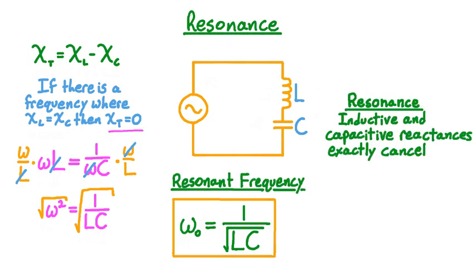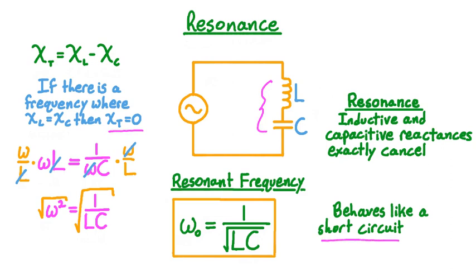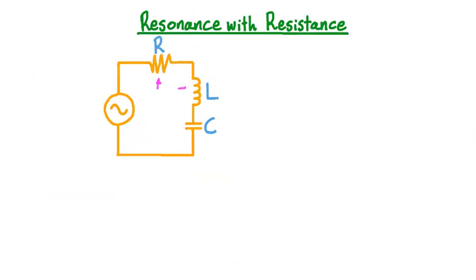Because on resonance the total reactance is zero, the inductor and capacitor behave like conducting wires, effectively creating a short circuit. If this were a real circuit, there would be some resistance inherent in the components and wires. So let's model this real-life situation with an ideal circuit consisting of an inductor, a capacitor, and also a resistor. Since this circuit has both resistive and reactive elements, the total opposition to current is given by the combination of resistance and reactance, known as impedance.